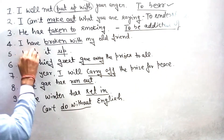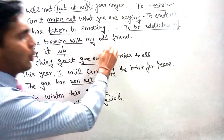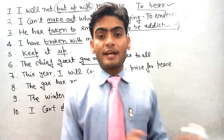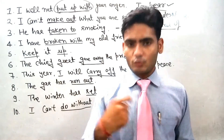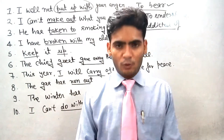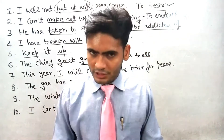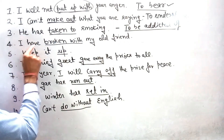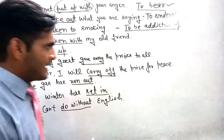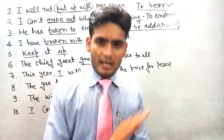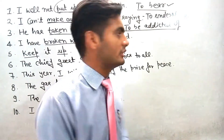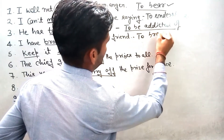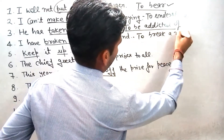चौथा sentence है: 'I have broken with my old friend.' यहाँ phrasal verb है 'break with'. Break with का मतलब होता है किसी से दोस्ती तोड़ लेना, यानि नाता तोड़ लेना। So break with means: to break a relation.